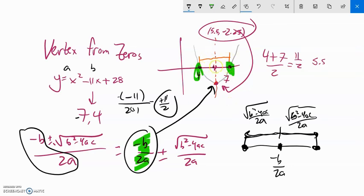So I can get it two ways. If I know the zeros, I can average them, or I can take this part of the quadratic formula, and that will give me the x value. And again, what I need to do to get the y is just plug it back in. Alright, give those a try.